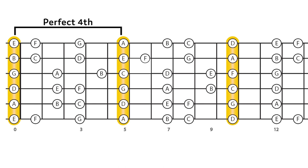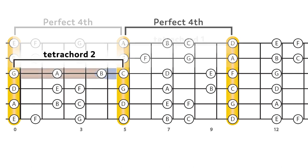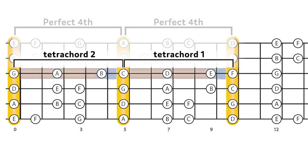There's a perfect fourth between these axes, the same interval we get between the lowest and highest notes of each tetrachord.